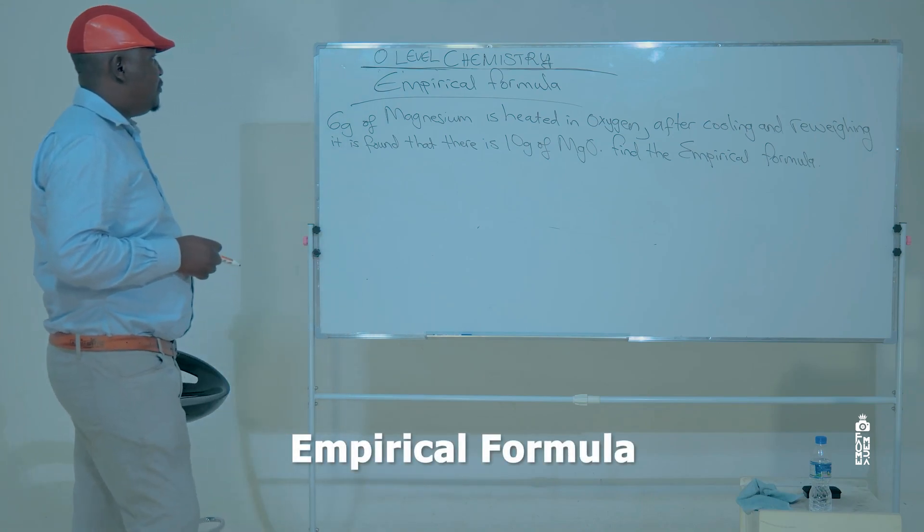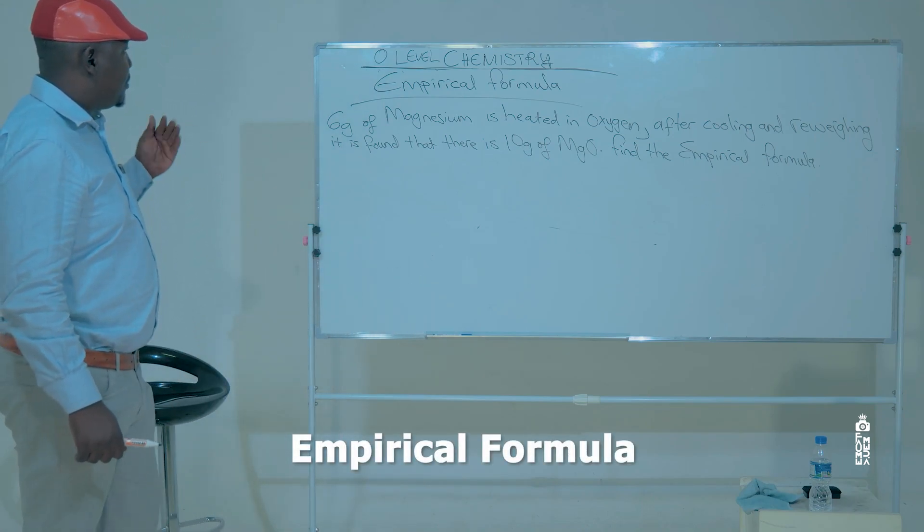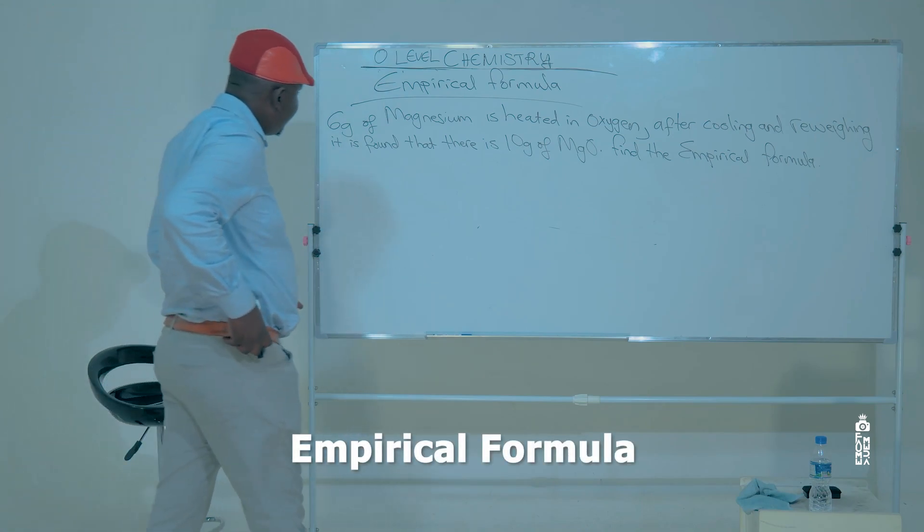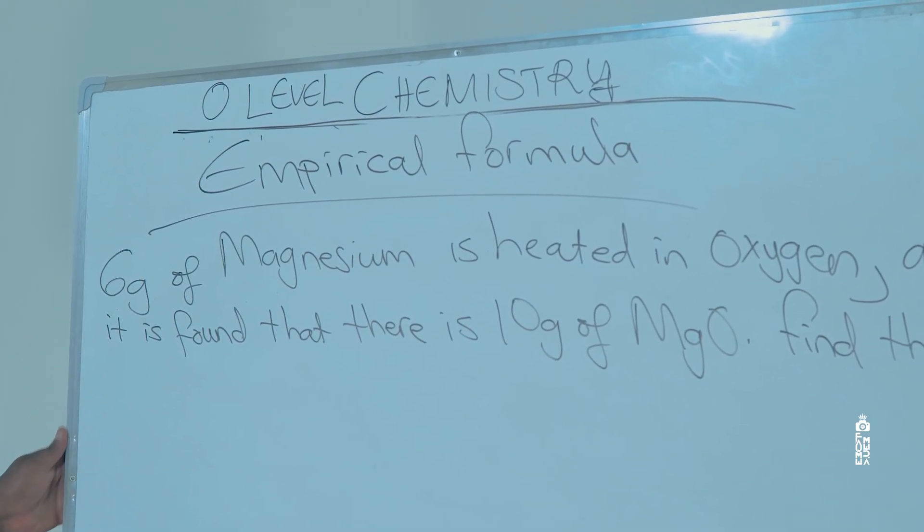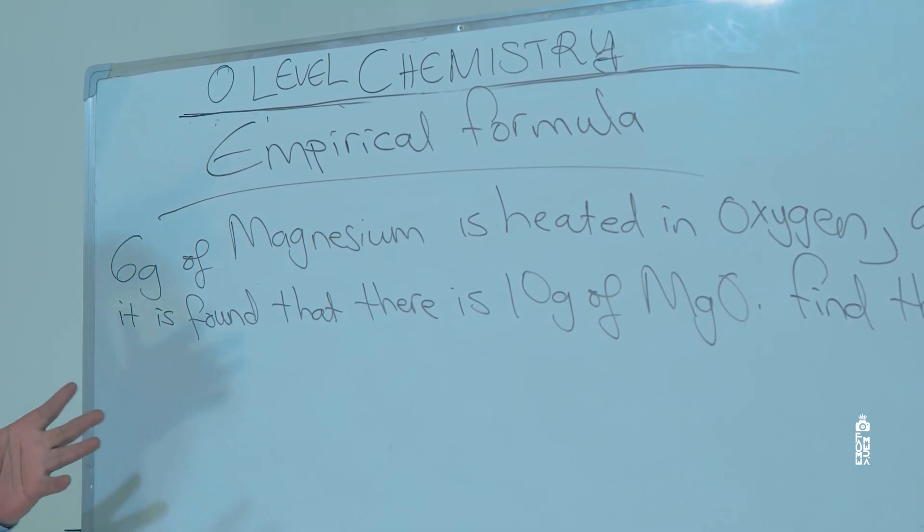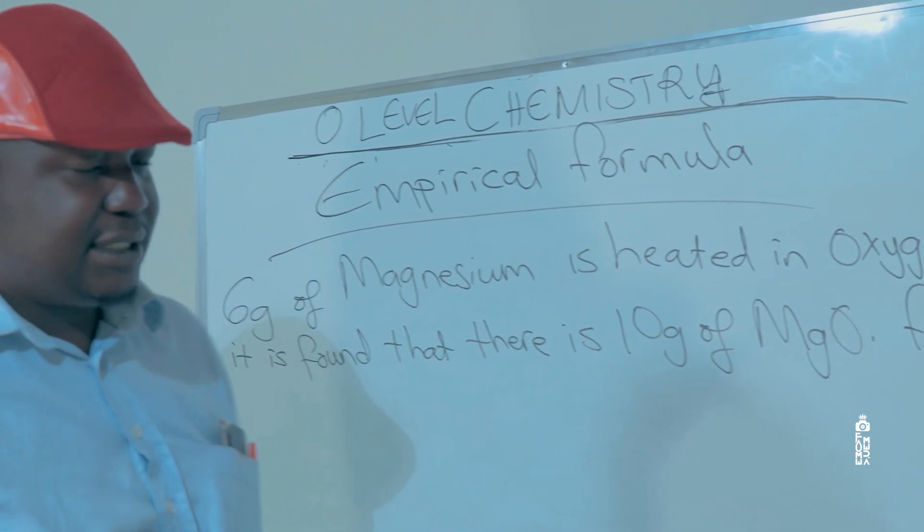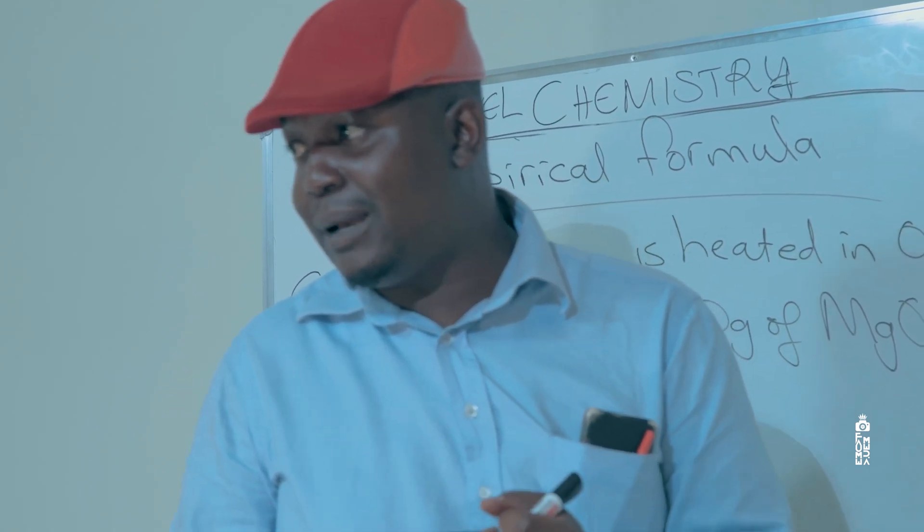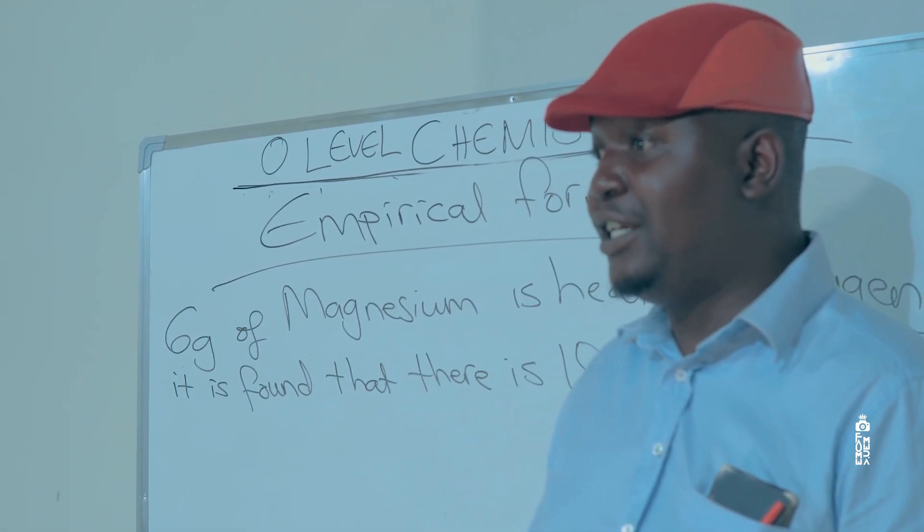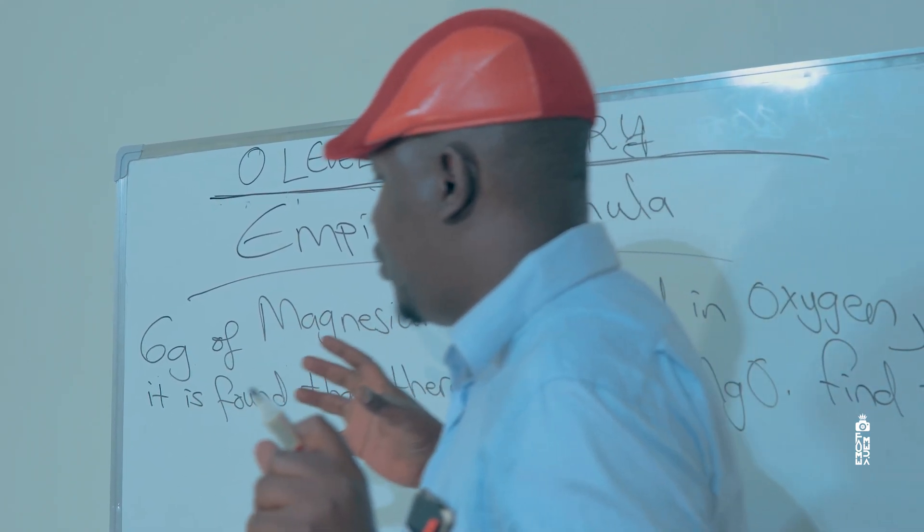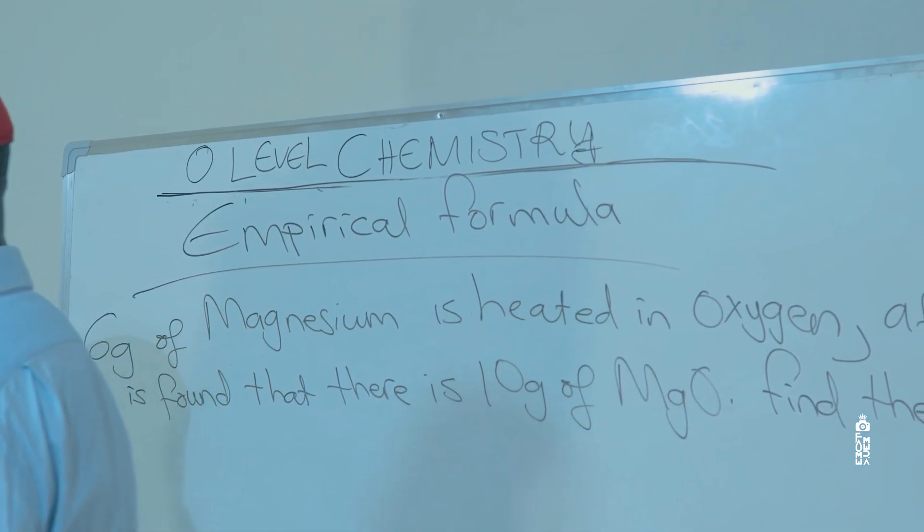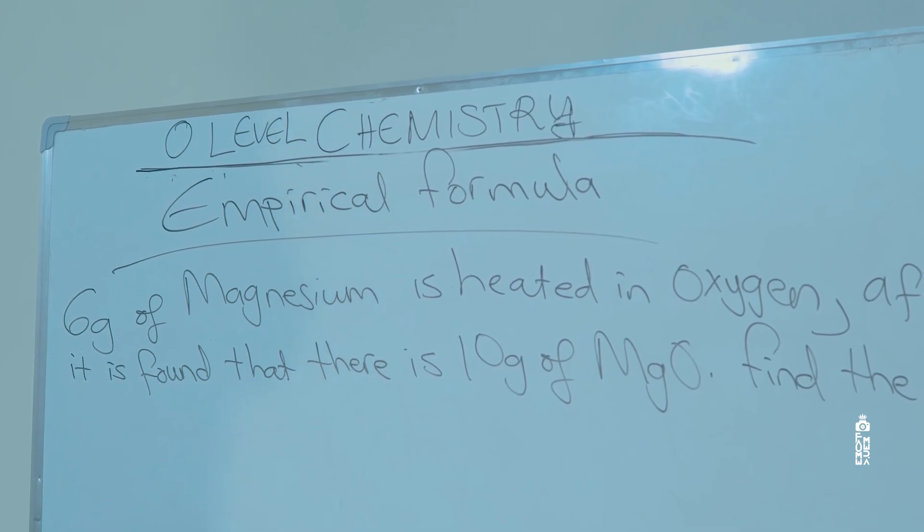in O-level chemistry under a subtopic called stoichiometry, and precisely we're going to be looking at a concept known as empirical formula. Empirical formula is basically the simplest ratio of atoms in a compound.